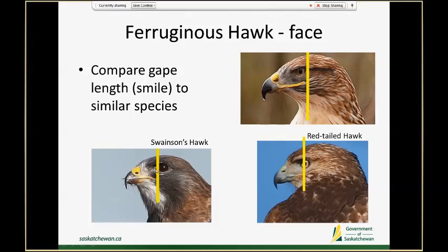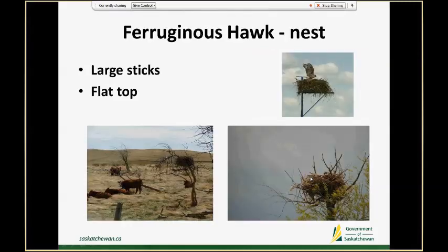The Swainson's has the shortest beak because they're more adapted to eat insects, so they have a short hooked beak that ends almost at the start of their eye. Compare that to a red-tailed hawk that has a medium-sized beak that goes a little bit past the start of the eye, but not quite as far back as what you would see on a Ferruginous hawk.